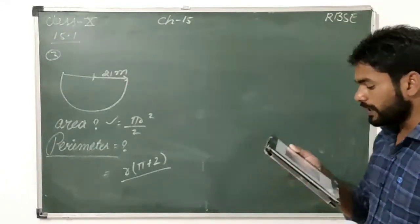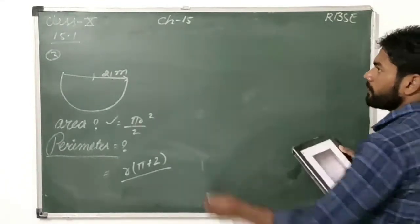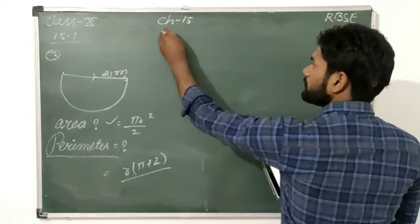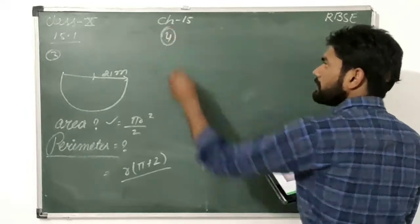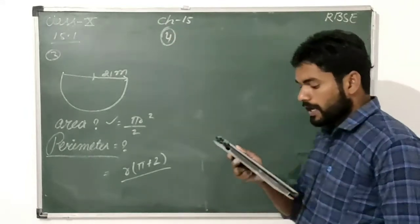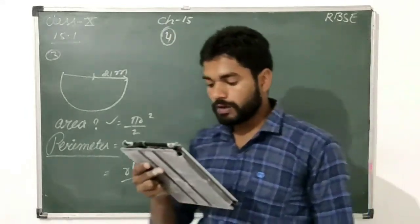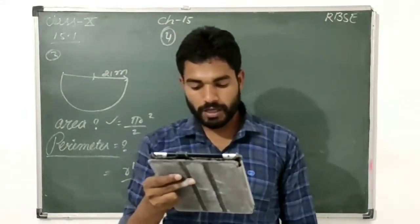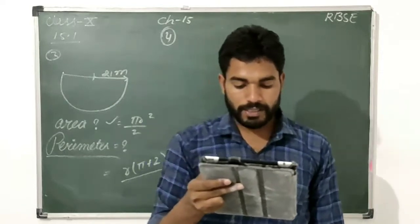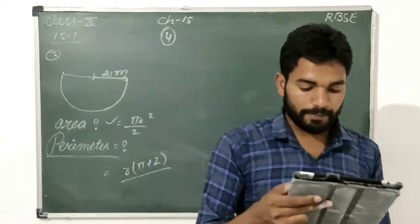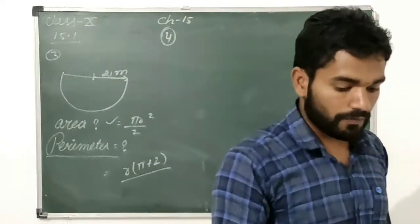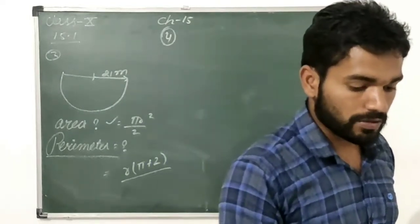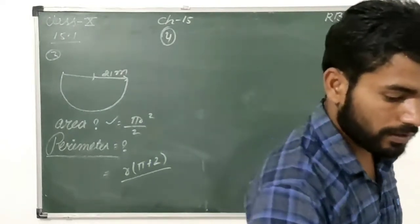Question 4: a scooter wheel makes 100 revolutions in covering a distance of 88 meters. Find the radius of the wheel.